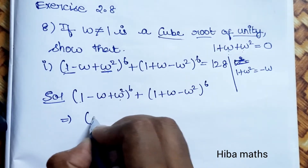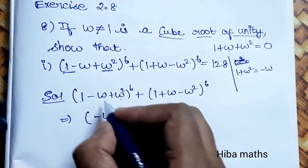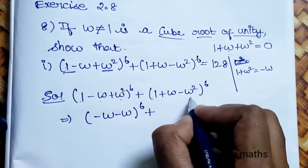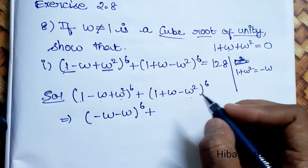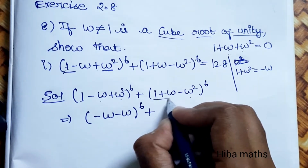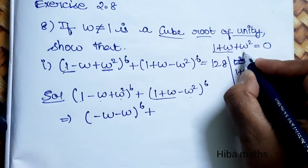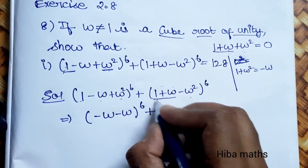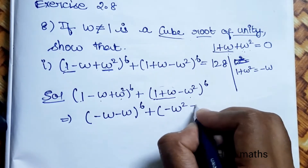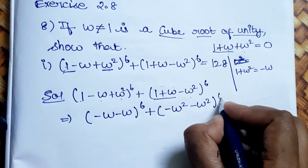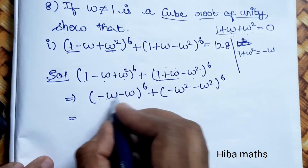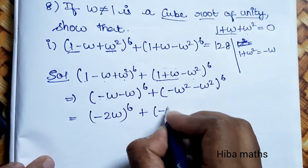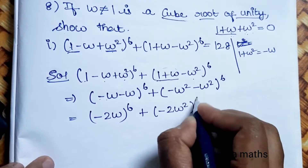Since 1 + ω² = -ω, we substitute. The first term becomes (-ω - ω)^6, giving (-2ω)^6, and the second term similarly gives (-2ω²)^6. Factoring: minus 2ω to the power 6 plus minus 2ω² to the power 6.